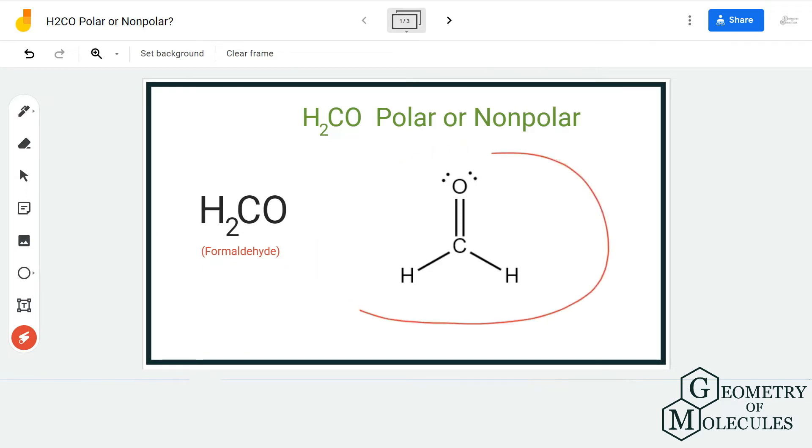To start with, we first need to look at its Lewis structure. So here is the Lewis structure of this molecule, in which the carbon atom is forming a double bond with an oxygen atom and it is forming two single bonds with hydrogen atoms. Now this structure itself cannot help us determine the polarity, but it helps us understand the arrangement of atoms in the molecule.